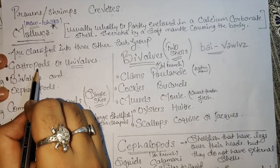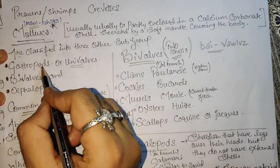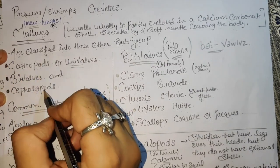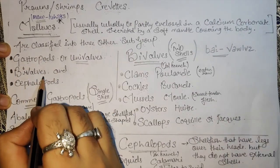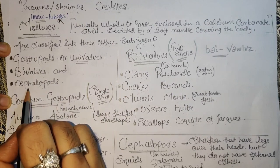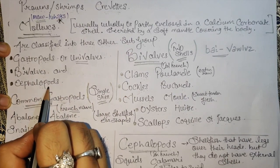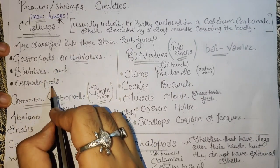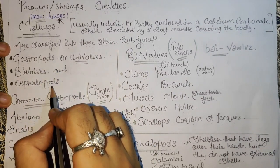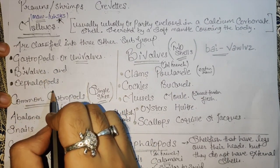The three subgroups of molluscs are: gastropods, bivalves, and cephalopods. These three are important. Let me tell you about each one — this is easy.